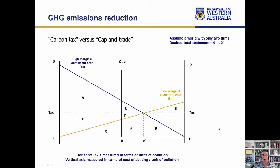With no intervention, we assume each firm is polluting an amount equal to the distance represented by the horizontal axis. So for the low cost firm, it's producing zero to zero prime units of output and that much pollution. The high cost firm is producing zero prime to zero units of output and that much pollution. The total amount of pollution is two times the distance of the horizontal axis — that's just in a competitive, unregulated market. Now let's assume the government steps in and is considering either a carbon tax or a cap and trade system.